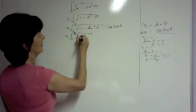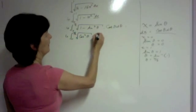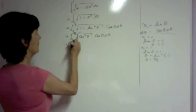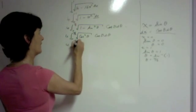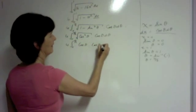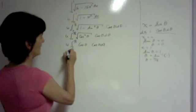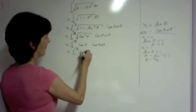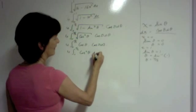And 1 minus sine squared is cos squared by cos theta d theta. And the square root of cos squared is the same as the square root of x squared, which is x. So it's cos theta by cos theta d theta. And cos by cos is just cos squared theta d theta.